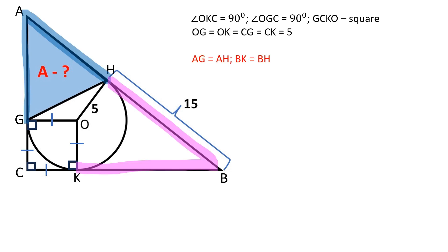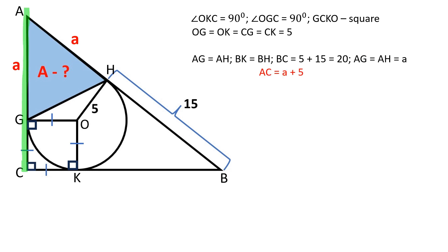AG is equal to AH and BK is equal to BH because two tangent segments that are drawn from the same external point are equal. Therefore BC is equal to 5 plus 15 which is 20. Let's represent AG and AH as A. AC is equal to A plus 5 and AB is equal to A plus 15.